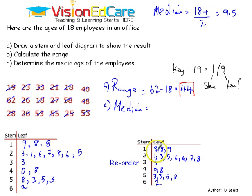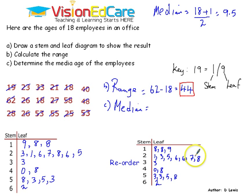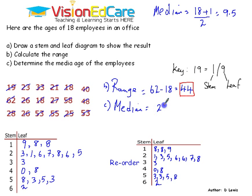All we have to do is count until we find position 9.5. Counting: 1, 2, 3, 4, 5, 6, 7, 8, 9. Position 9.5 would be between 27 and 28. The middle number between 27 and 28 is 27.5. So the median age is 27.5.